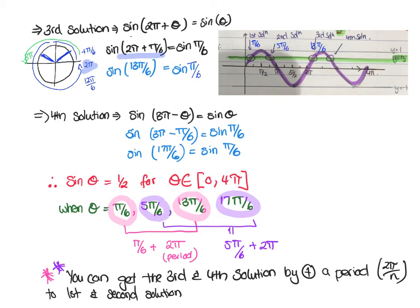The fourth solution would be just short of three pi. So we do three pi minus π/6. Three pi in terms of sixths is 18π/6, and subtracting one gives 17π/6. So the four answers are: π/6, 5π/6, 13π/6, and 17π/6.